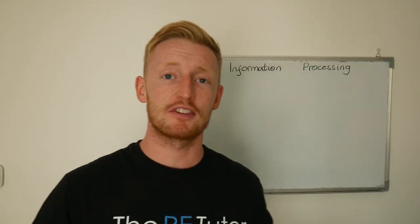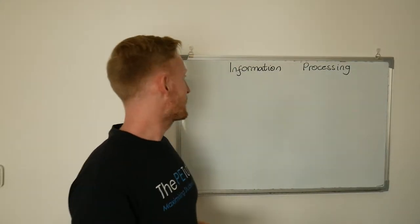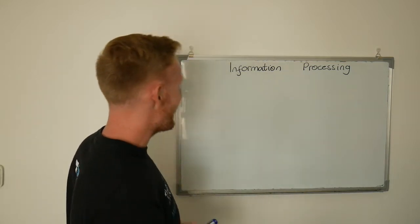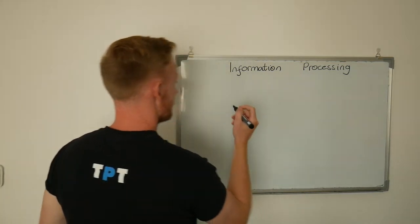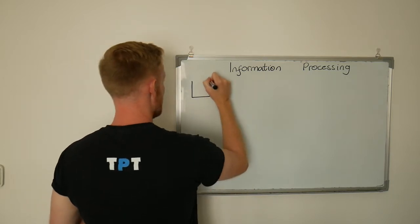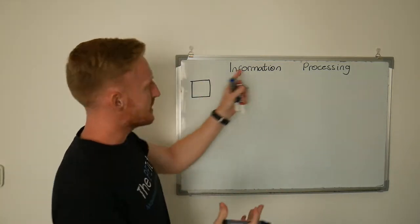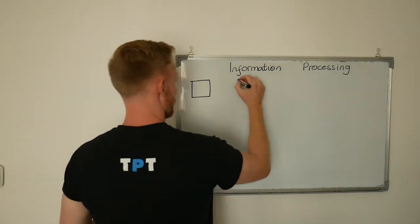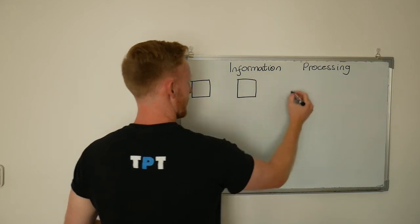Hello and welcome to today's mini lesson from the PE portal. Today we are looking at information processing and there are four different areas to information processing that you need to know. I'm going to go through each one, both the term which describes each stage and then what actually goes on at each stage.